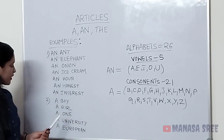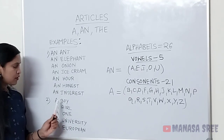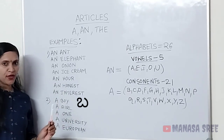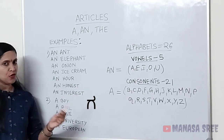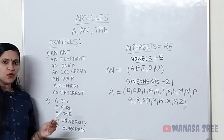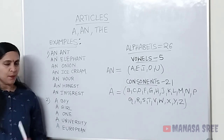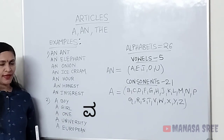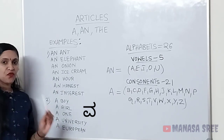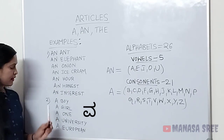Next: a boy. 'B' is a consonant sound — consonant letter — consonant sound 'ba'. A boy. A girl — 'ga' consonant sound. A one — friends, 'o' is a vowel letter, so we might think 'an', but this is wrong. Illhi nangke consonant sound nage nodhi — consonant sound nage — article na use maatthi vi. A one — 'wa' sound — consonant sound friends — so 'a' article na use maatthi vi.